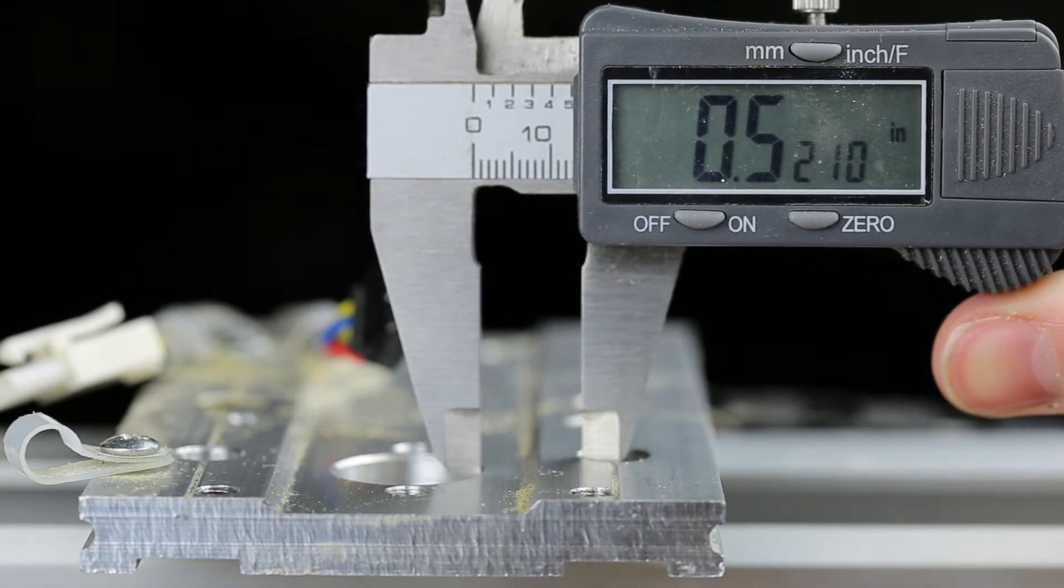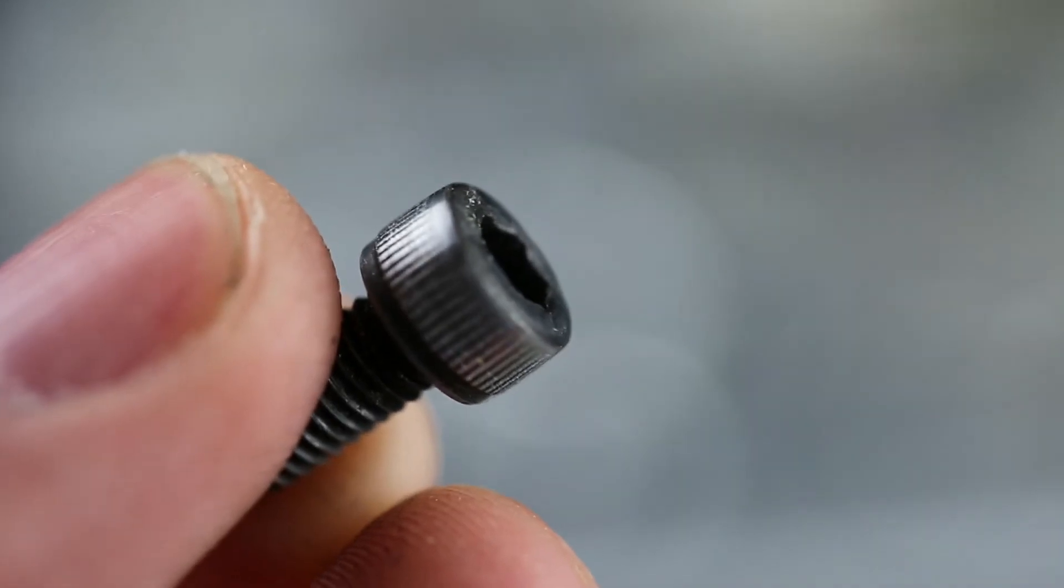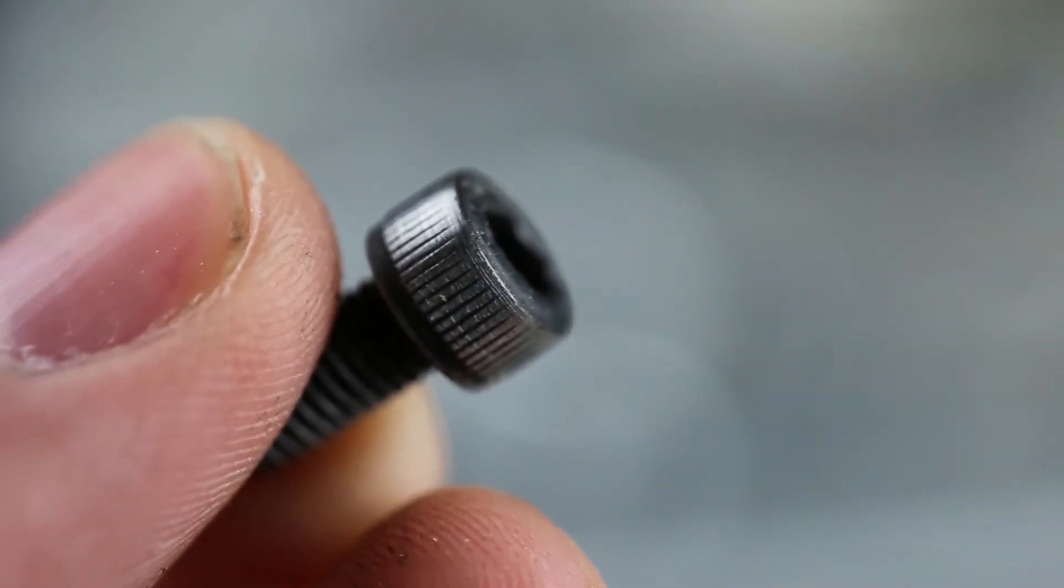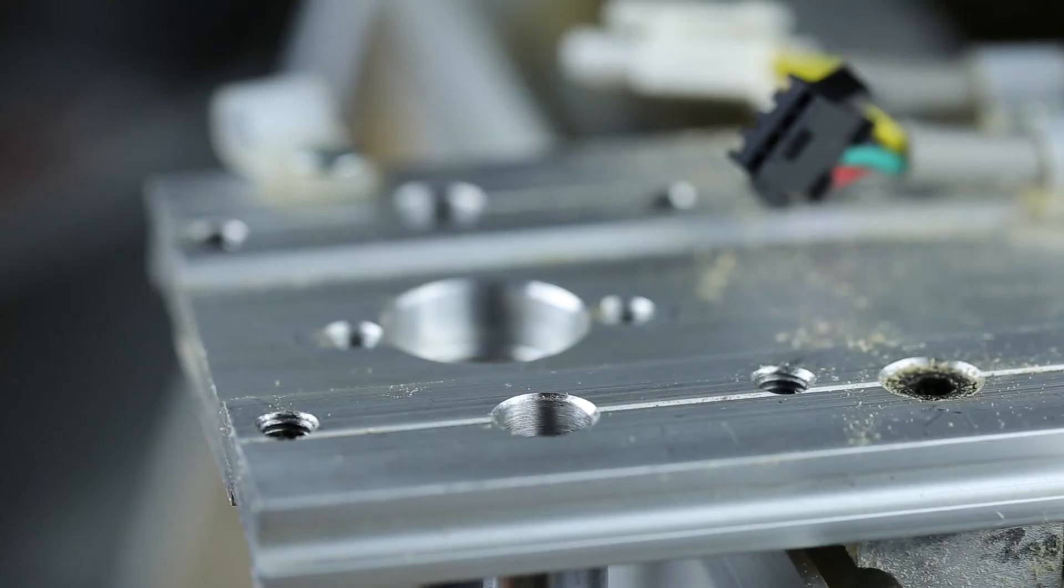I ended up sanding down the heads of the screws to allow them enough clearance to self-align, though in reality I'll probably make these aluminum parts over again at some point and I'll put a video up for it.